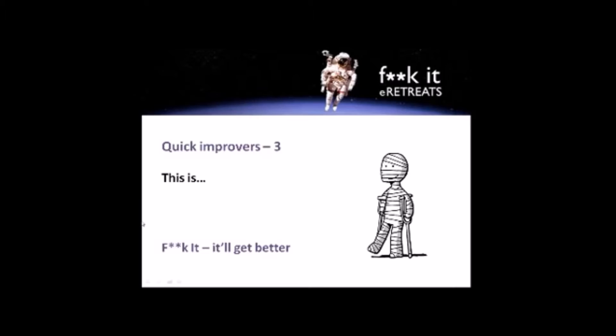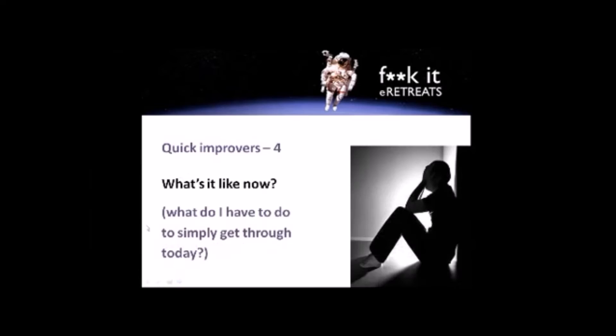So fourth and last quick improver, then to the slow improvers, the deeper side. What's it like now? What do I have to do to simply get through today? We save the best till last because this is the one I use every time when things get really tough. The temptation, always for me at least, is to project our pain and our worry and our anxiety and our panic well beyond what's actually happening, and that can be totally overwhelming.